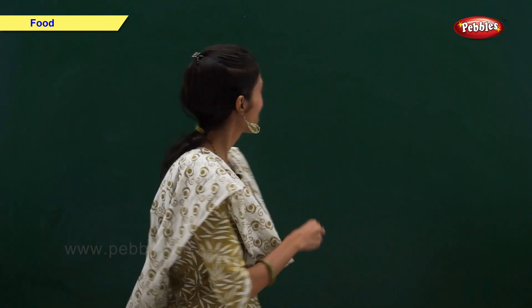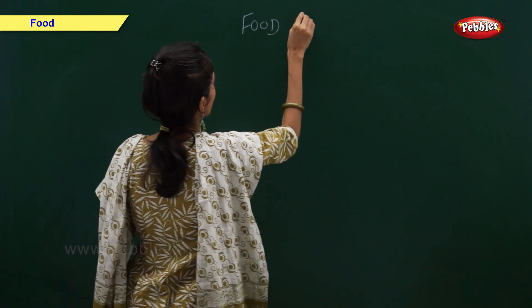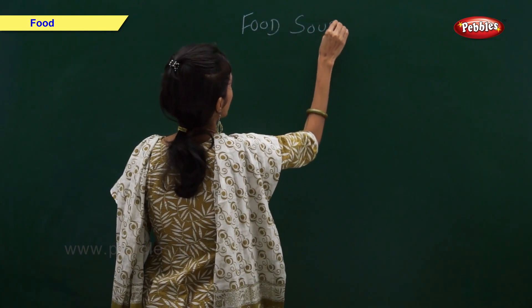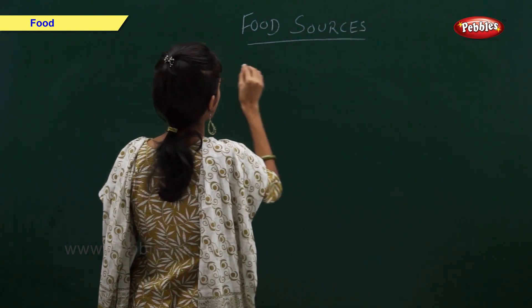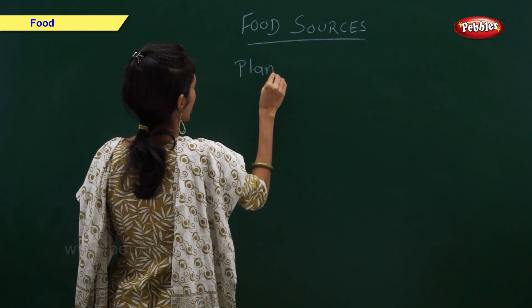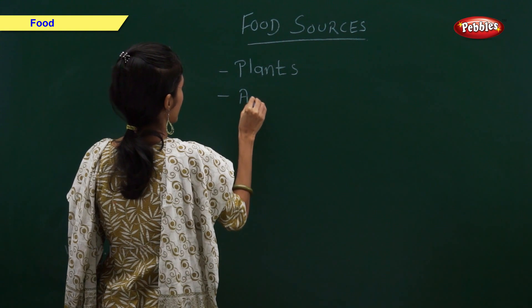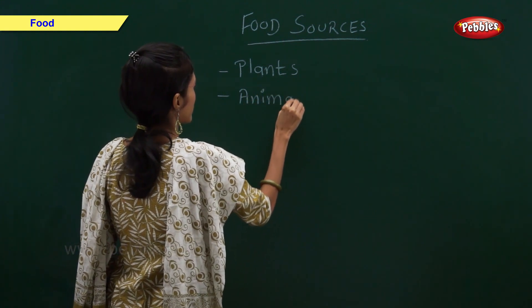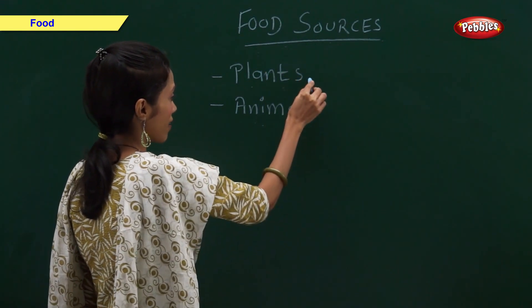There are many kinds of food. We get food from plants and animals. So, our food sources are plants and animals.